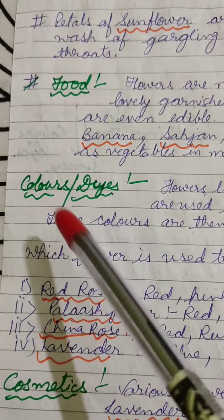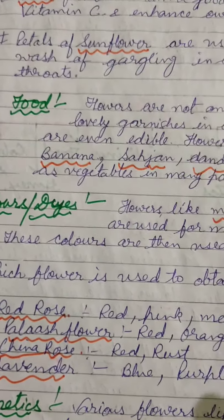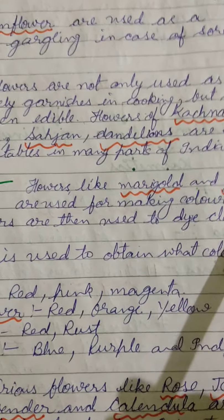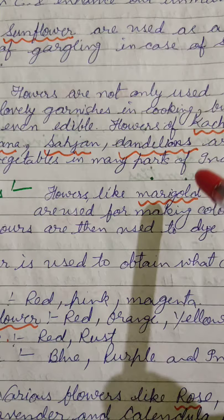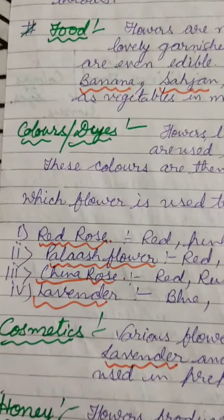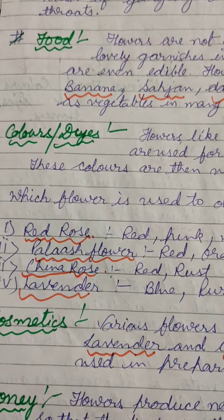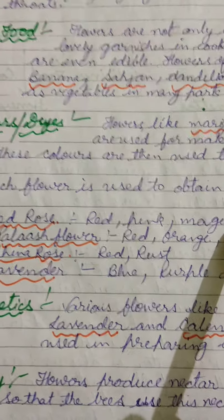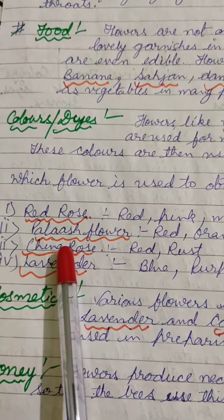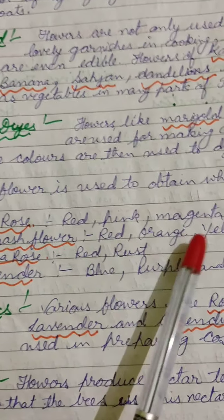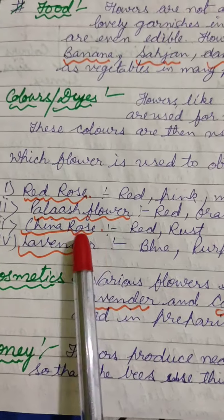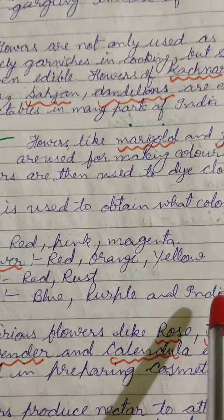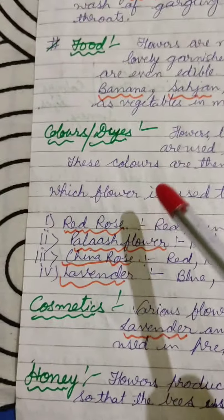The next use of flowers is for color or dye. Various flowers are also used to make different types of colors, which are then used to dye clothes. Flowers like marigold, zinnia, and rose are used for making color. From red rose we obtain red, pink, and magenta color; from the flame tree flower we get red, orange, and yellow; from china rose we get red and rust color; and from lavender we get blue, purple, and indigo colors.